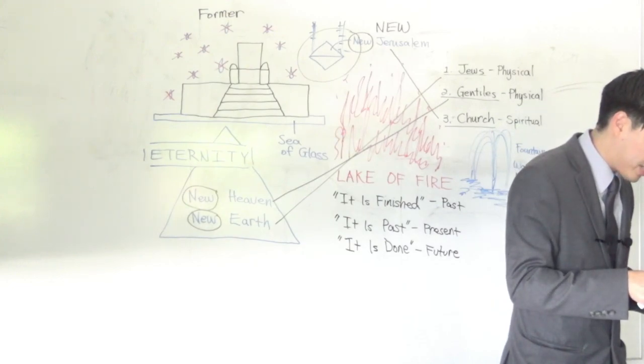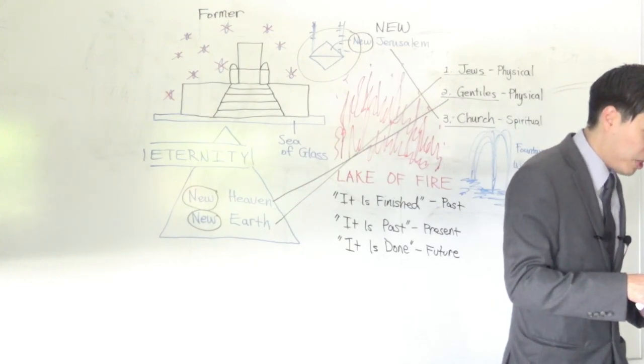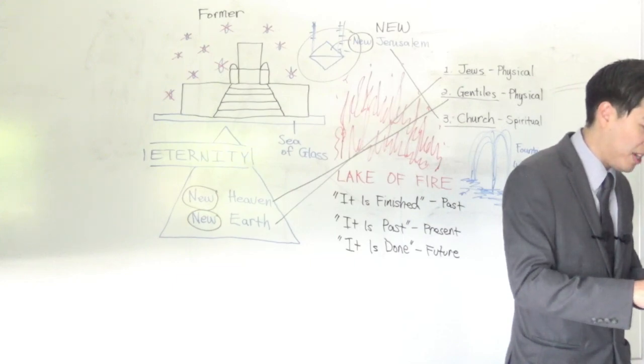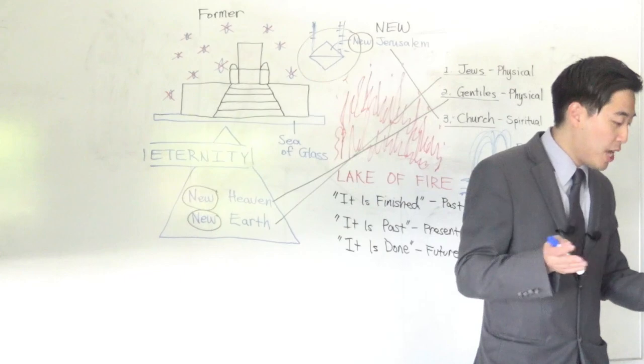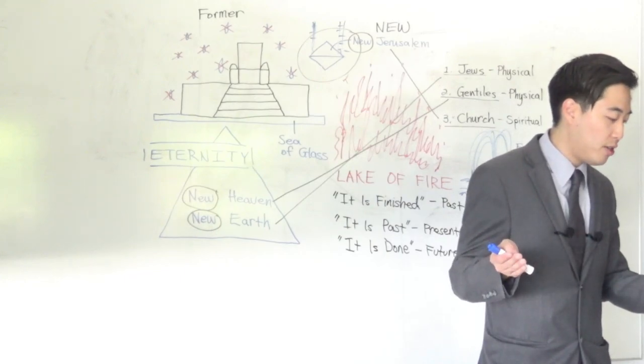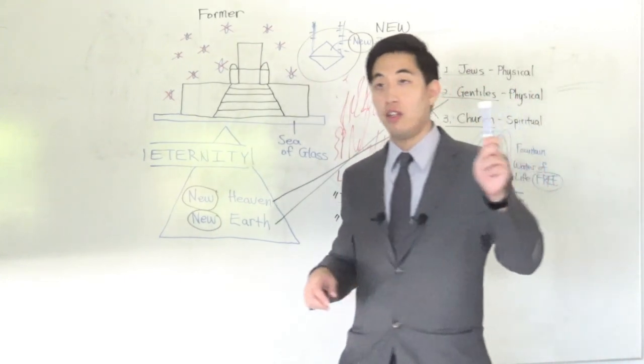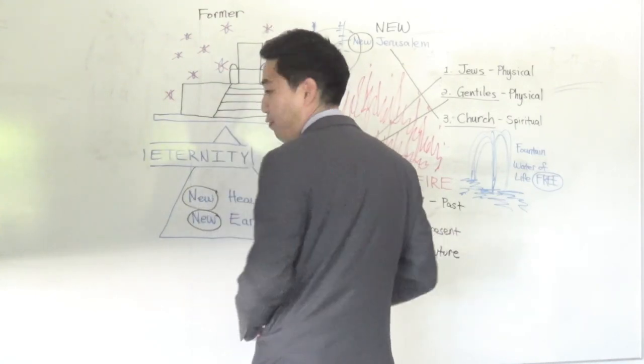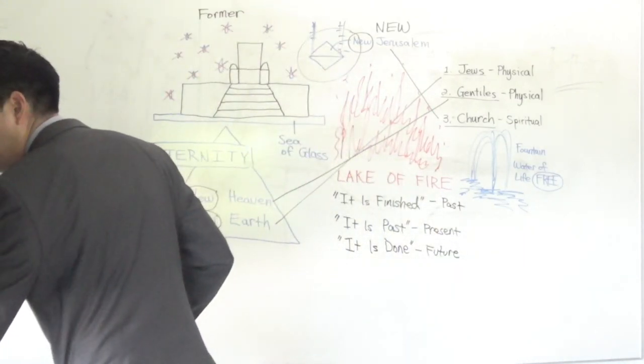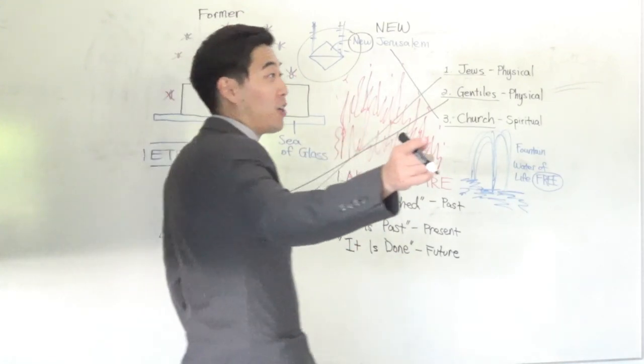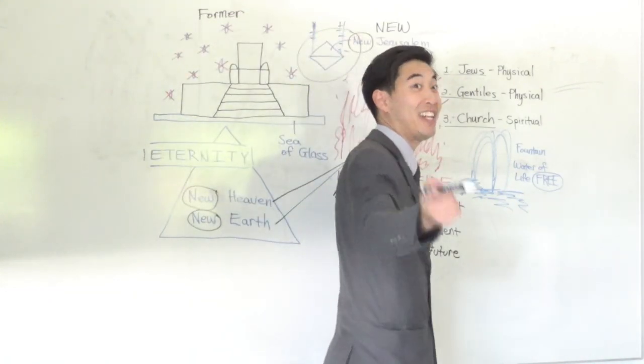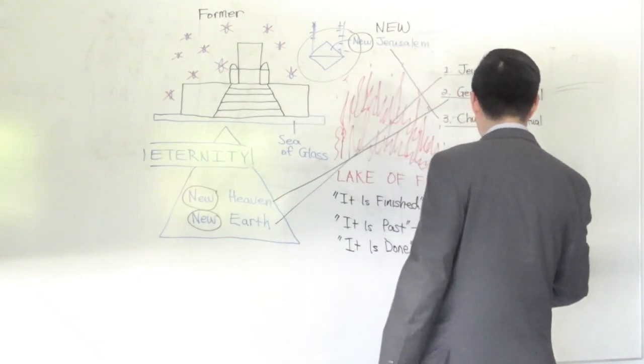Now notice what he says at verse 14, blessed are they that do his commandments. These are works, it's not free, that they may have right to the tree of life. Look, the tree of life is not free, but the water of life is free. Wait a minute, it was free a long time ago, the tree of life. Go to Genesis 2.